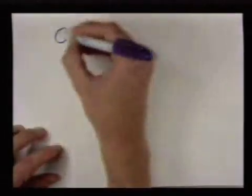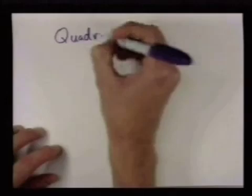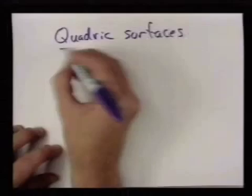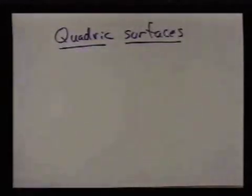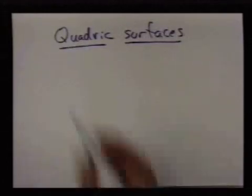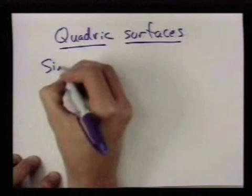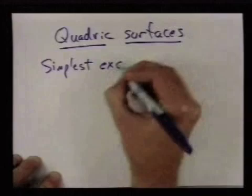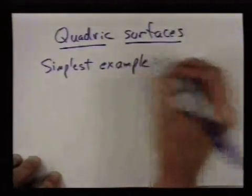A better class of examples, maybe, are the quadric surfaces. And I'm not going to tell you the general definition of these quite yet. I'll go through that in class. But let's just talk about the simplest example, which we've already seen, namely a sphere.